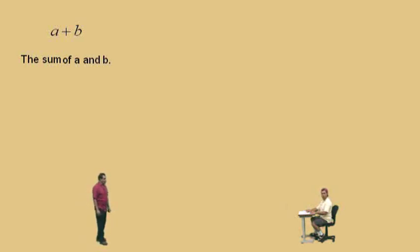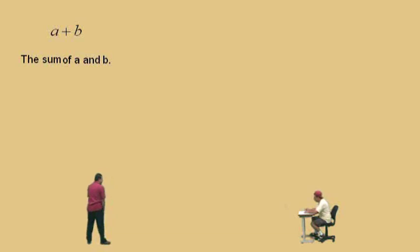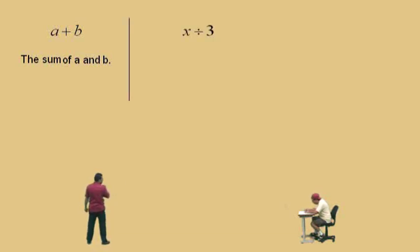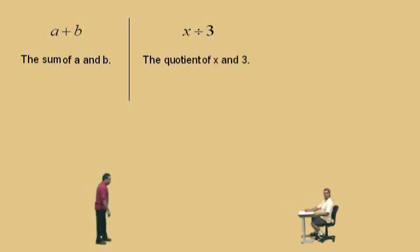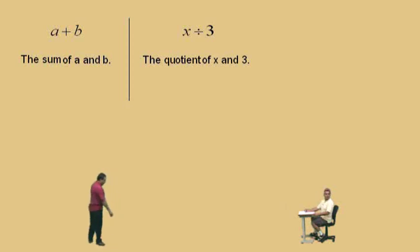Let's do another one. Now, what is this? The quotient — it's the quotient of what two things? X and 3. The quotient of X and 3. Very nice there, Charlie.